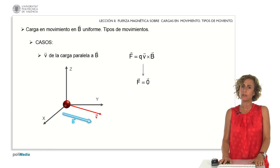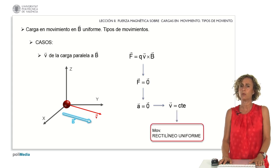With zero force, the acceleration vector diminishes to zero as well, resulting in a constant velocity vector. In such a scenario, the particle's motion will follow a path of uniform and rectilinear movement.